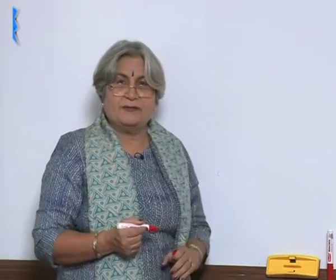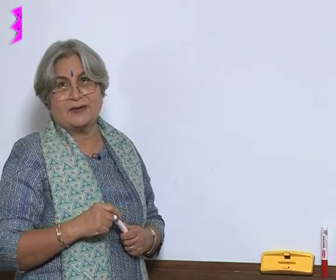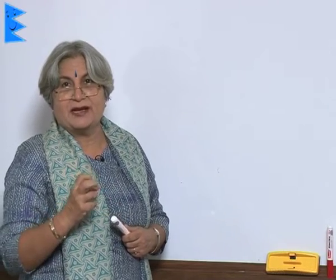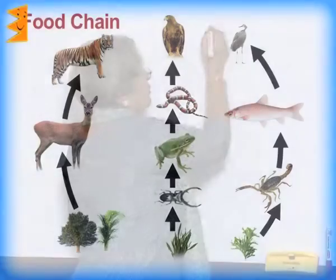In an ecosystem there exist many relationships — like we have relations with our friends, relatives, and family. Similarly, an ecosystem is also a large extended family. There are many animals in it, and these animals have a certain relationship. But this time the relationship is not just a social relationship — it is a relationship of food.